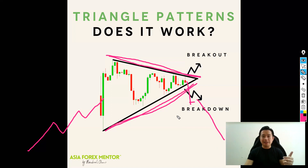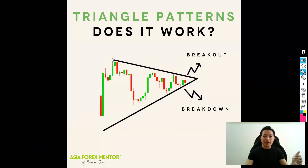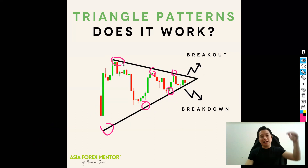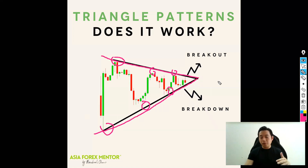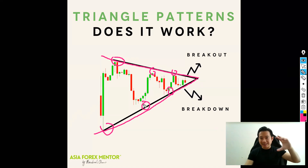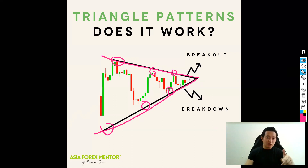Triangle patterns are always on traders' minds when they look at a chart. They're clearly identified by looking at the highs and the lows. If the highs and lows are moving in the same converging direction, you draw a trend line joining the highs and another joining the lows to form the area of potential breakout. When the pattern is well-defined, the market always squeezes — getting smaller and smaller until it finally breaks.